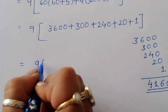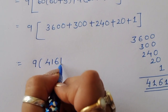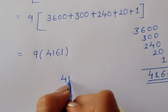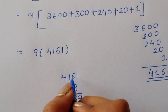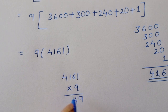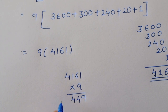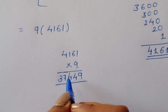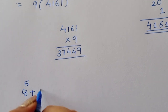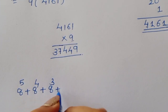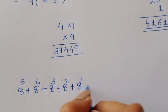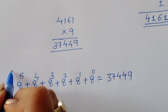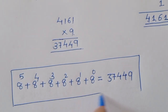Now we multiply 9 times 4161. 9 times 1 = 9, 9 times 6 = 54 (write 4 carry 5), 9 times 1 = 9 plus 5 = 14 (write 4 carry 1), 9 times 4 = 36 plus 1 = 37. So the value of 8⁵ + 8⁴ + 8³ + 8² + 8¹ + 8⁰ is equal to 37,449. That is the value of this expression. Thank you.